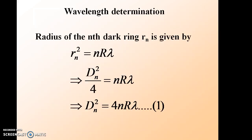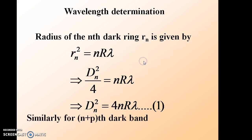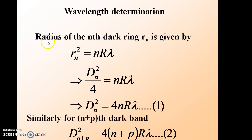For wavelength determination, the radius of the nth dark ring R_n is given by R_n squared equals n·r·λ, where n is the order of the dark band, r is the radius of curvature of the plano-convex lens, and λ is the wavelength of the monochromatic source of light. We can write this expression in terms of diameter as d_n squared divided by 4 equals n·r·λ, or equivalently d_n squared equals 4·n·r·λ. Let us call this equation 1.